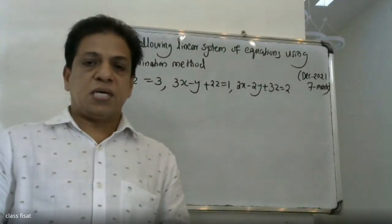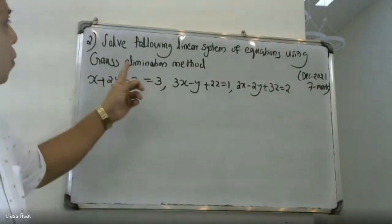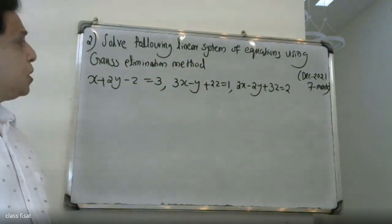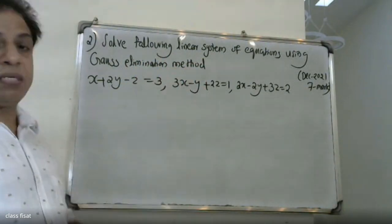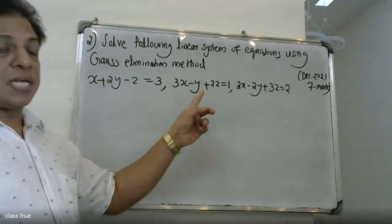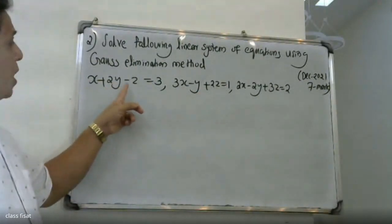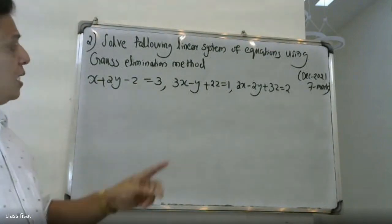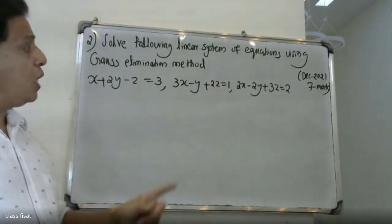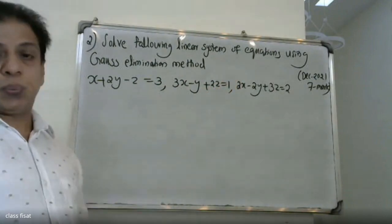Good morning, students. At the university questionnaire. Solve the following linear system of equations using the Gaussian elimination approach. First equation: x plus 2y minus z is equal to 3. Second equation: 3x minus y plus 2z is equal to 1. Third equation: 2x minus 2y plus 3z is equal to 2.